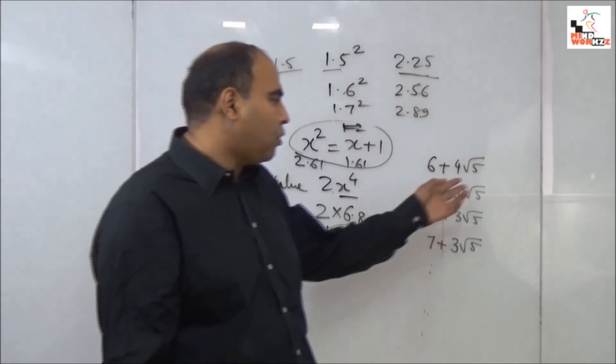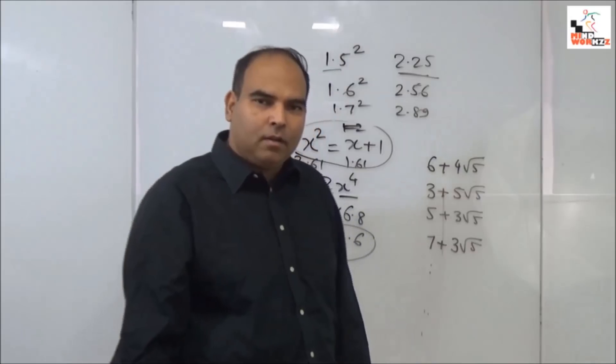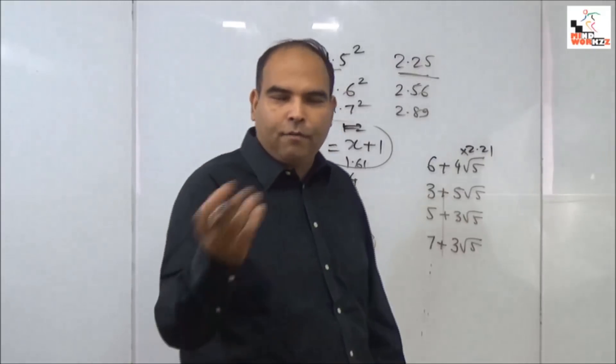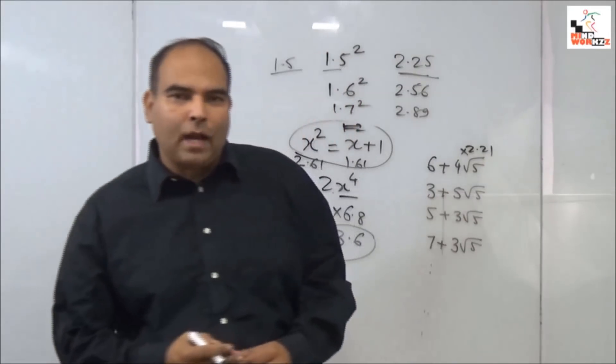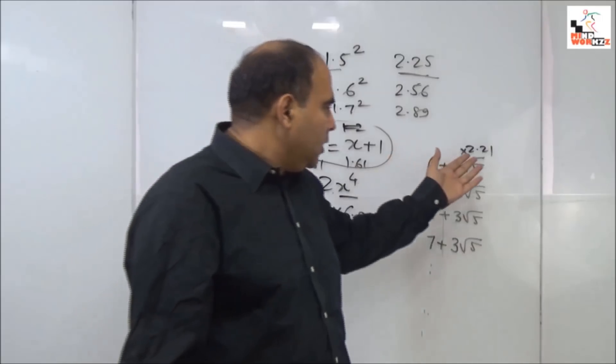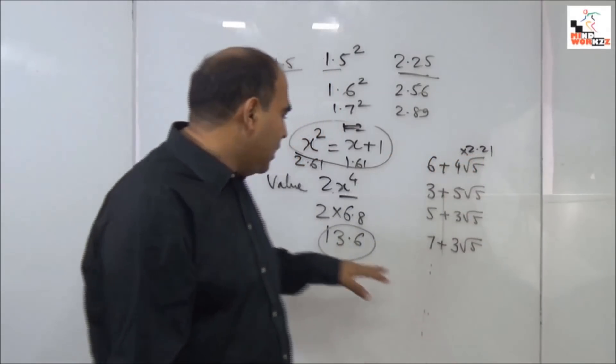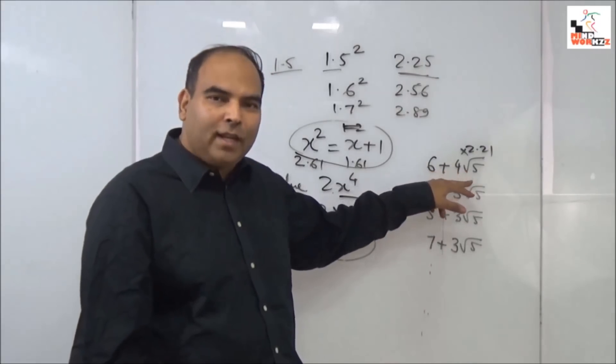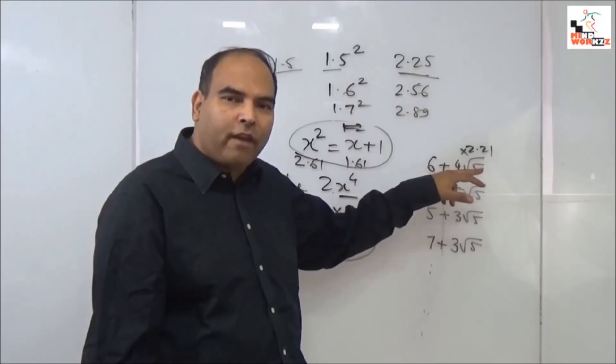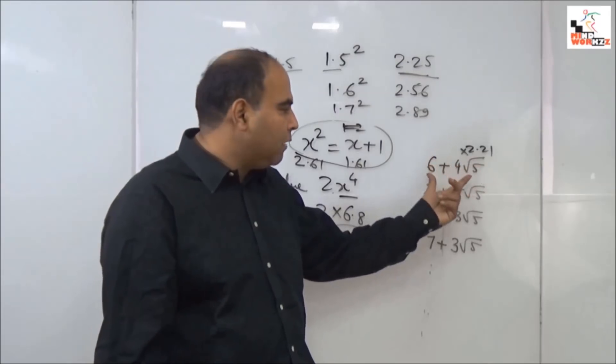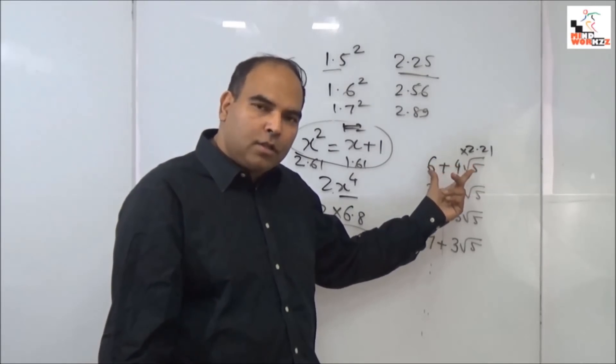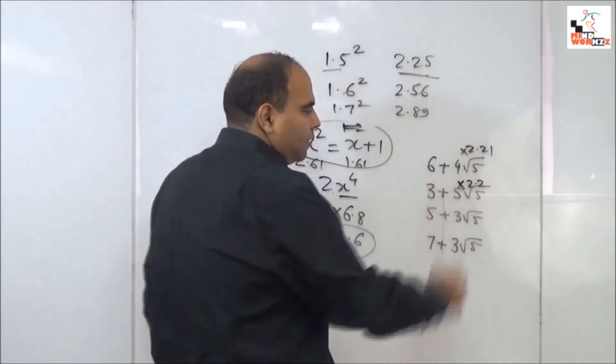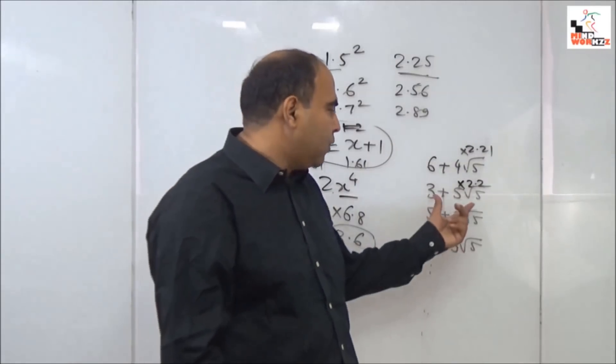To this if we add the knowledge that √5 ≈ 2.21, and your target value is 13.6, the first option gets removed very easily because 6 + 4√5 = 6 + 4(2.21) gives you a number more than 14. The second option, 3 + 5(2.2) = 11 + 3 = 14, which is again more than 13.6.